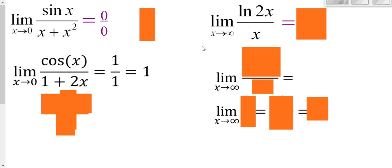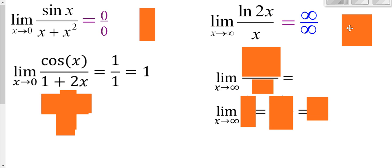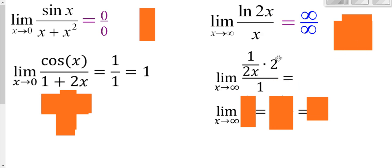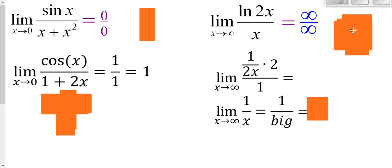L'Hôpital's Rule even works when looking at limits going towards infinity. Plugging in infinity: the natural log of something really big is really big, over something really big — infinity over infinity, an indeterminate form. Apply L'Hôpital's: derivative of the top is 1 over (2x) times 2 via chain rule, over derivative of the bottom which is 1. The 2's cancel, leaving 1/x. Plugging in infinity: 1 over something really big is close to 0, so the limit is 0.